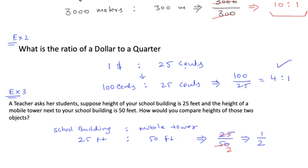So you can say that the height of the school building to the mobile tower, if I were to write it differently, it is 1 is to 2, or which is the same thing as 25 is to 50. So we will stop here for ratios and we go to our next topic which is about proportions.